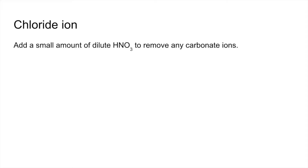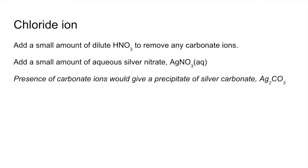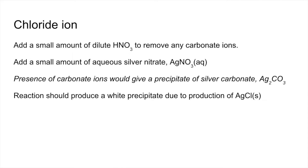Moving on to the halide ions, starting with the chloride ion. You add a small amount of dilute nitric acid first, and that's to remove any carbonate ions — we'll look at that in more detail when we look at the correct order of the tests. You then add a small amount of aqueous silver nitrate solution. If there were any carbonate ions present and you didn't remove them with the nitric acid first, you would get a precipitate of silver carbonate, giving a false positive. Assuming chloride ions are present and no carbonate ions, you should get a white precipitate due to the production of silver chloride, and there's the ionic equation for that precipitation reaction.